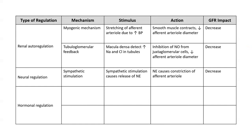In the summary table, neural regulation results from stimulation of the sympathetic division of the autonomic nervous system. When input from the sympathetic nervous system is high, norepinephrine is released, causing constriction of the afferent and, to a lesser extent, the efferent arterioles. This causes reduced blood flow to the glomerulus, reduced glomerular blood hydrostatic pressure, and therefore reduced GFR.